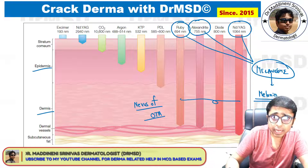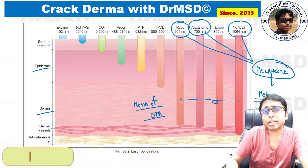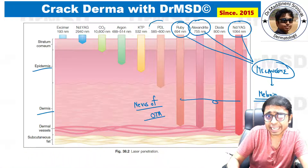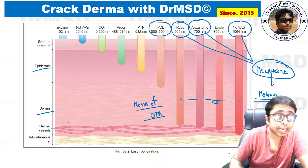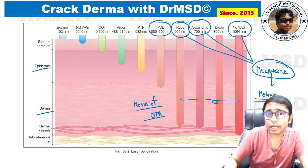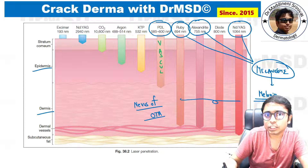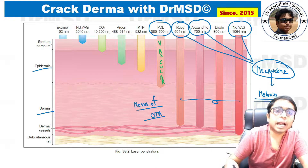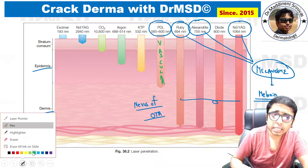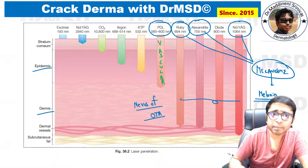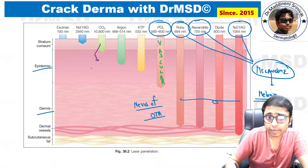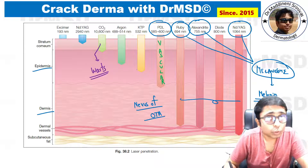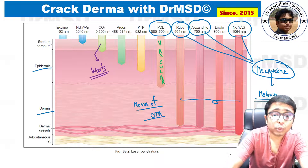Just remember these important laser names, and a few other important uses: PDL stands for pulsed dye laser, and pulsed dye laser is used in patients having any vascular lesions over their body. CO2 laser — carbon dioxide laser — can be used in conditions like viral warts; we can remove those warts with the help of CO2 laser.